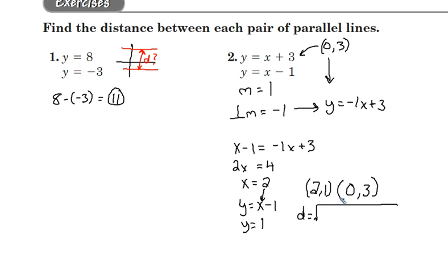Distance formula, square root of the distance between the x-coordinate squared and the distance between the y-coordinate squared. The x-coordinates, 2 and 0. That distance is 2 minus 0. Y-coordinates, 1 minus 3. That distance, 1 minus 3 there.